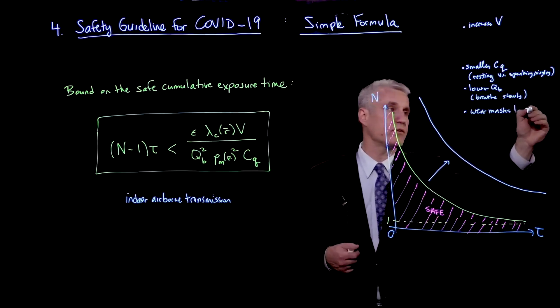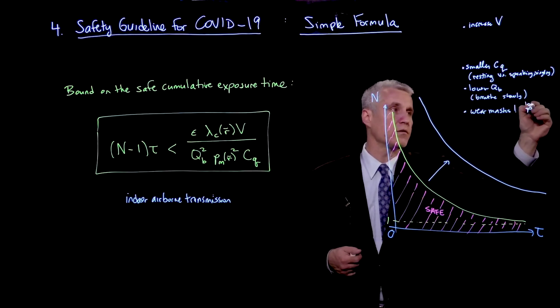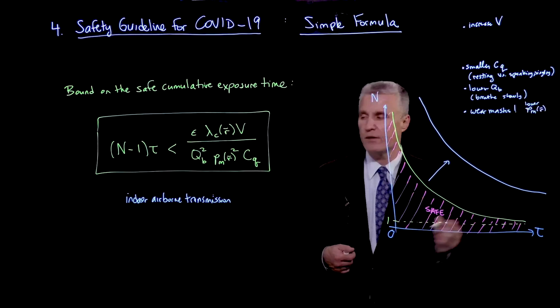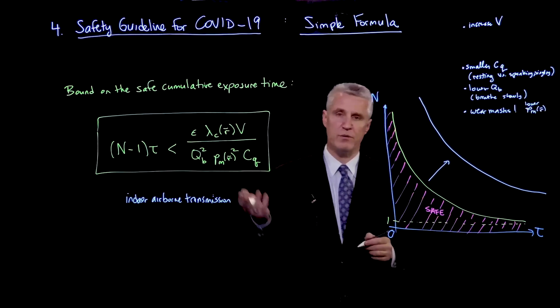So this is basically lower P mask. So when there's no mask, PM is equal to 1.